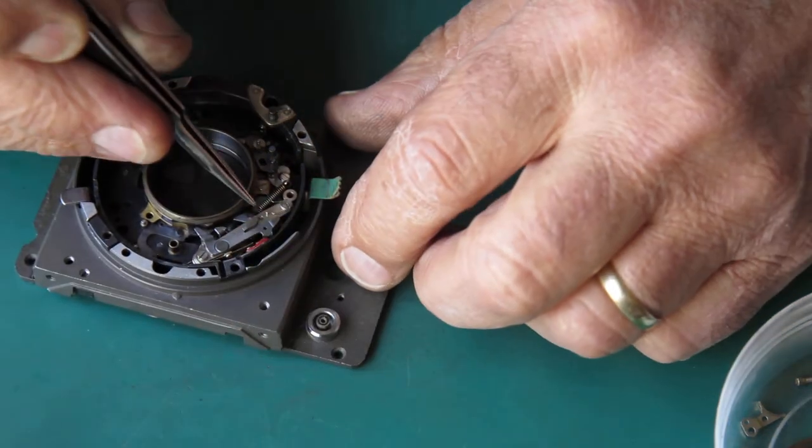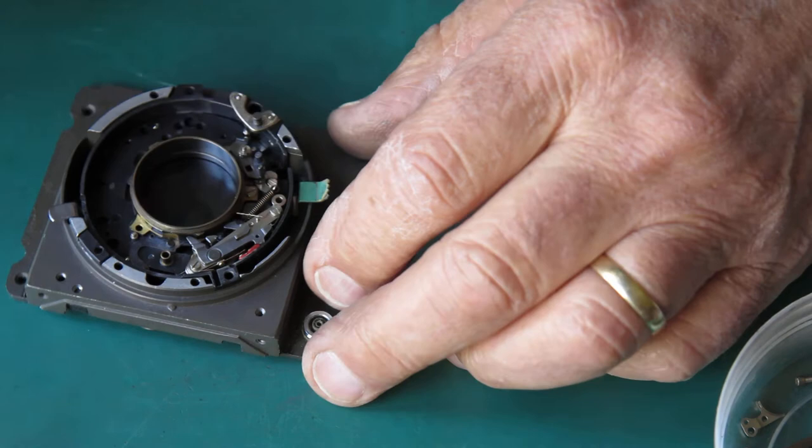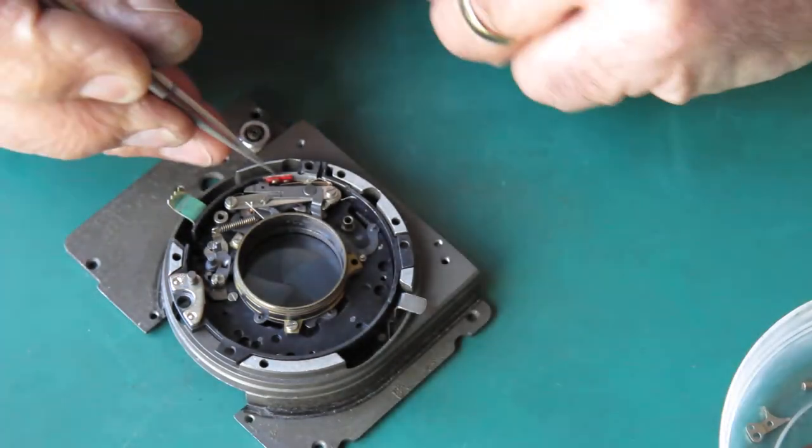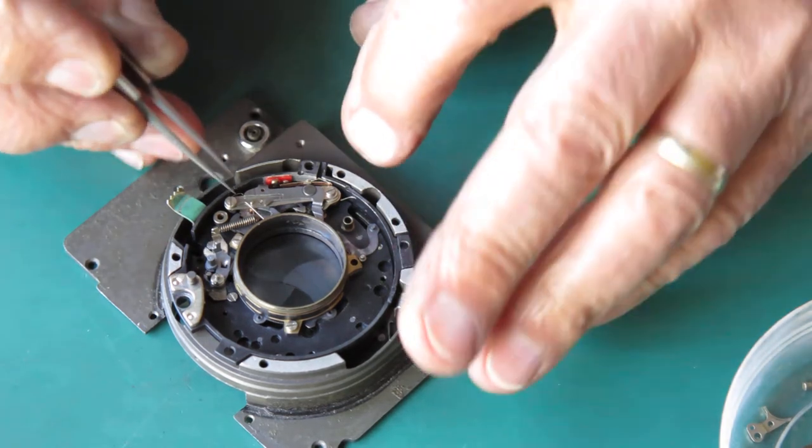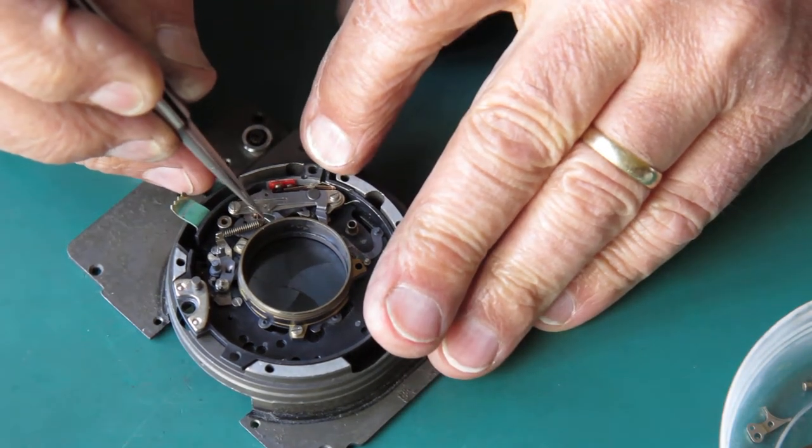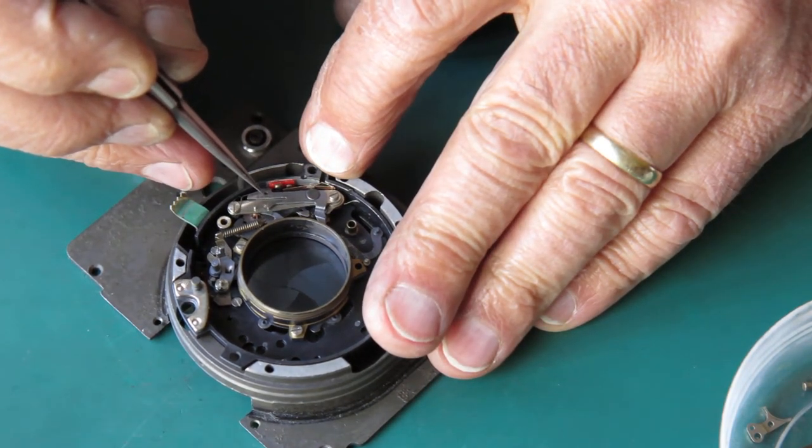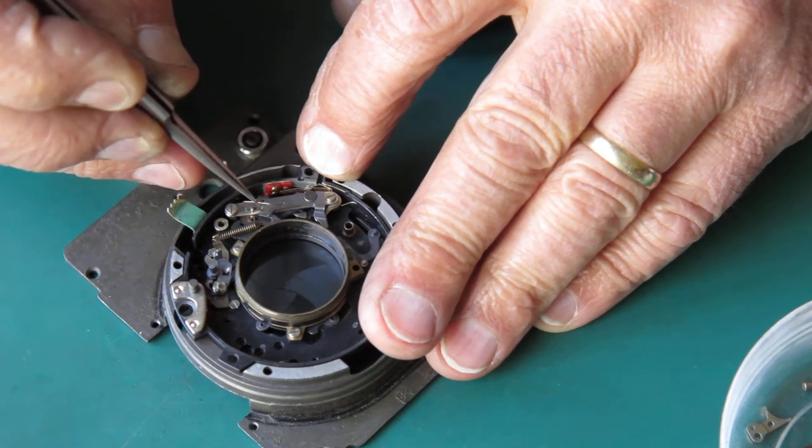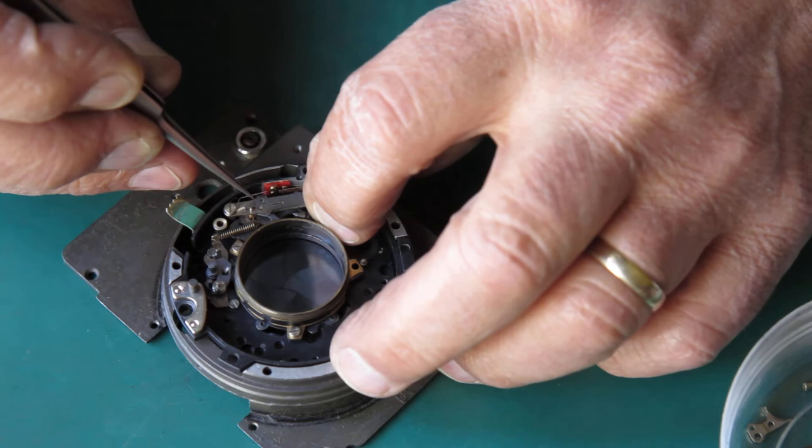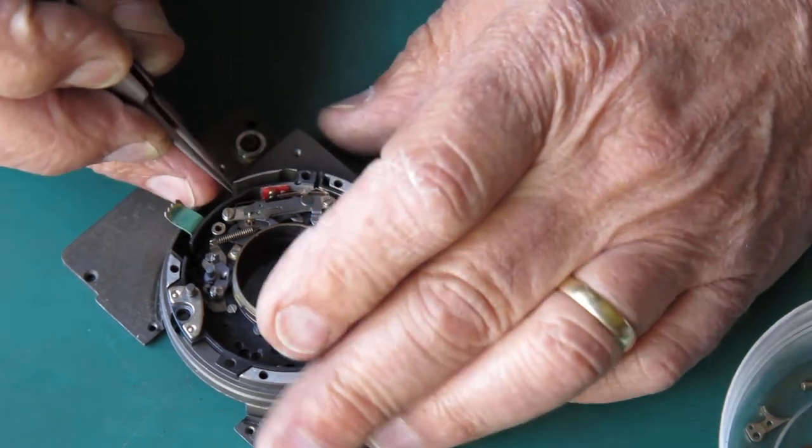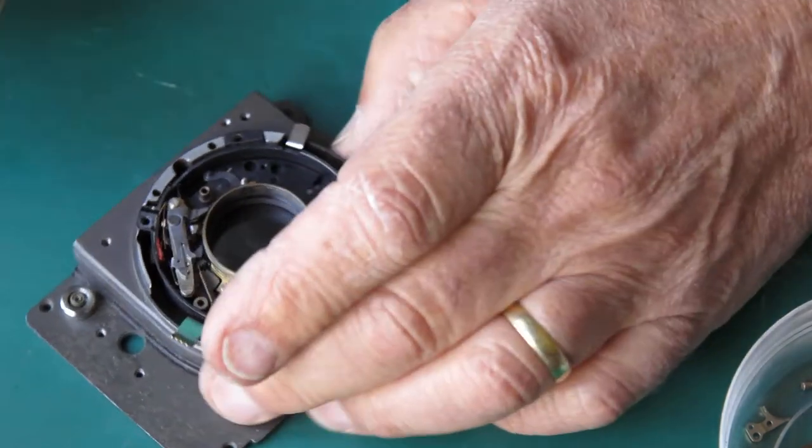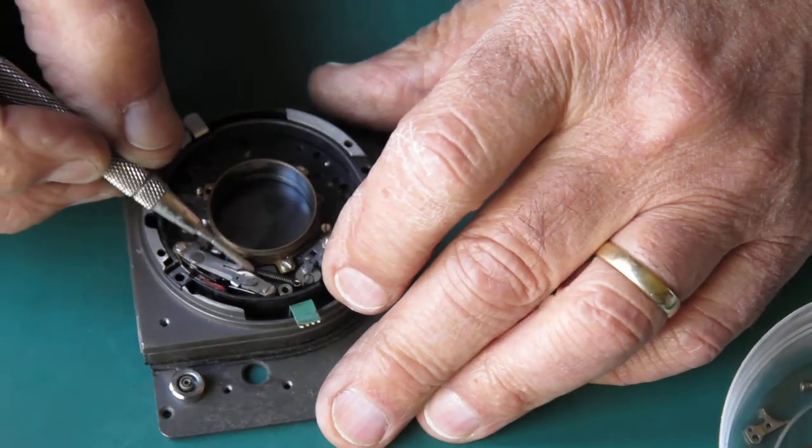And the spring needs to be lifted over and latched into a notch in the back of this arm. So I'll just get my pointy tweezers and do that. There. That's good. So that means that this arm is now spring loaded.